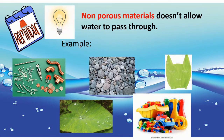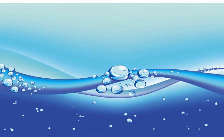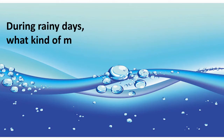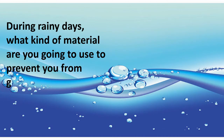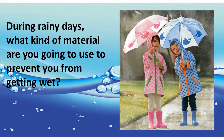There are different materials in our environment that can be classified according to their properties — they can be classified based on their ability to absorb water, and some materials can absorb water more than others. During rainy days, what kind of material are you going to use to prevent you from getting wet? We can use an umbrella or raincoat, because they are plastic that does not allow water to pass through. So those are the best materials to use during the rainy season.